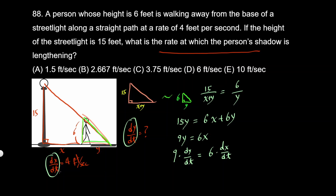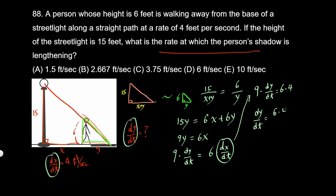All we've got to do is plug in numbers now. dx/dt is 4, so we get 9 times dy/dt equals 6 times 4. Solving for dy/dt, it's going to be 6 times 4 divided by 9. So dy/dt is 2.6 repeating — units are feet per second. The answer is going to be b.